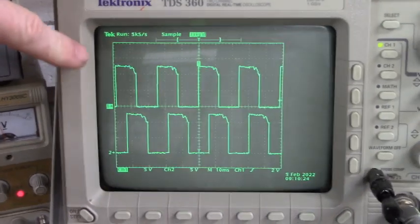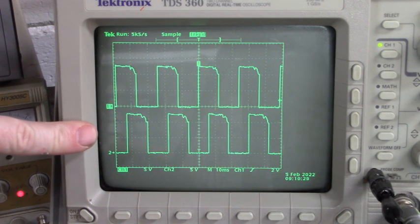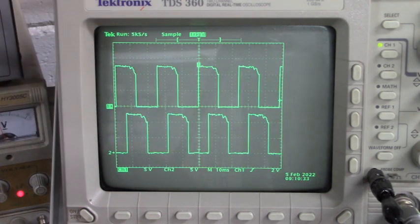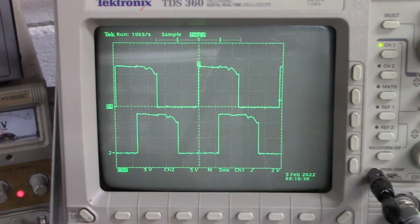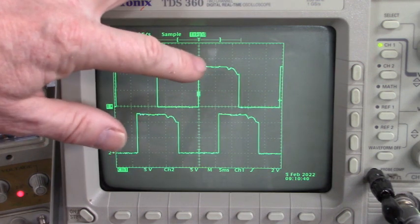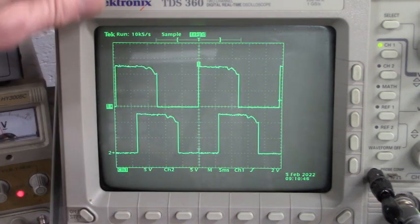This top waveform is phase A, this bottom waveform is phase C. You can see, let me spread that time out a little bit, you can see that the waveforms are 90 degrees apart.